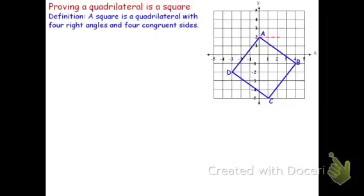To begin, let's find the slope triangles of all four segments of this quadrilateral. Once I do that, I can find the length of all four sides. For instance, AB has a slope triangle where the legs are four and three, so three squared plus four squared equals AB squared, by the Pythagorean theorem. Remember, you will always use the Pythagorean theorem to find the lengths of any diagonal segment.